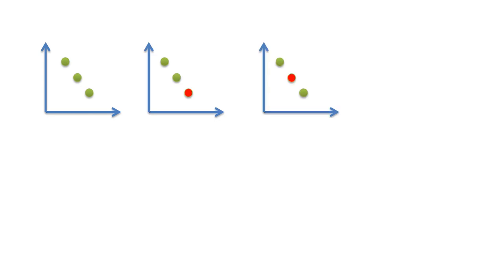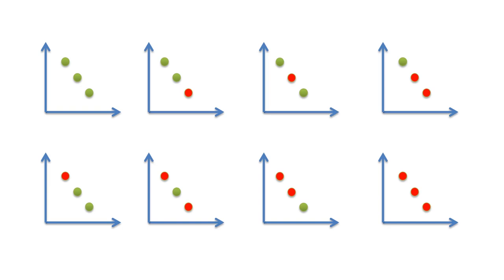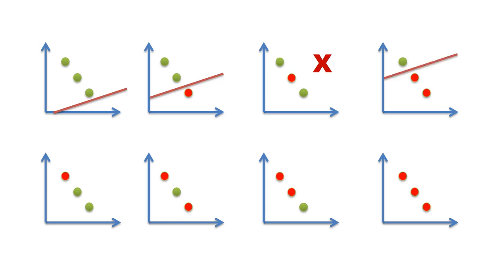Now consider the case of three data points. We check whether a straight line can correctly classify all eight possible combinations. Case one: possible. Case two: possible. Case three: not possible — we cannot find a straight line that separates the two classes correctly. Case four: possible. Case five: possible. Case six: again not possible. Case seven: possible. Case eight: possible. So out of the eight possible ways, two cases cannot be correctly classified using a straight line.